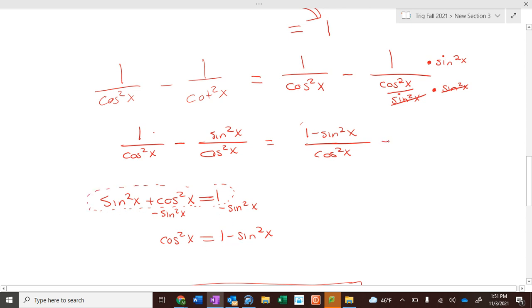Now, over here, I can replace 1 minus sine squared of x with cosine squared of x. All of a sudden, we got cosine squared of x over cosine squared of x, which is 1. Now, will everything just turn out to be 1 like these last two problems? No, they will not.